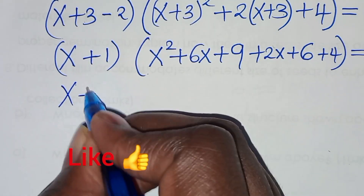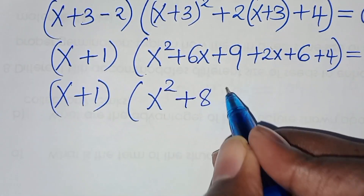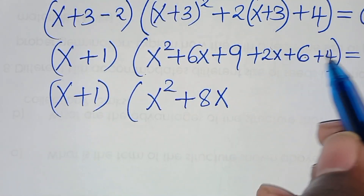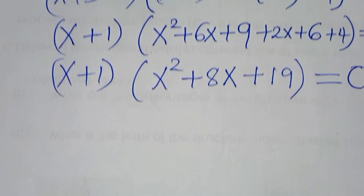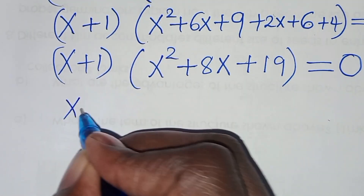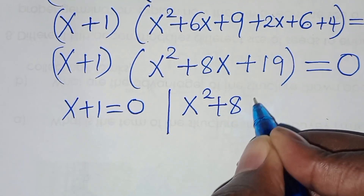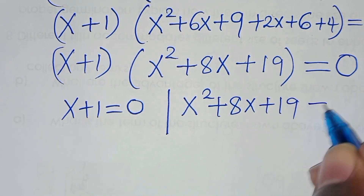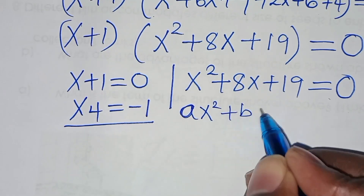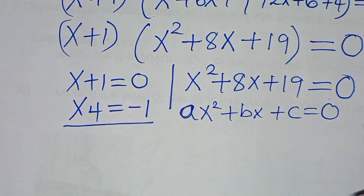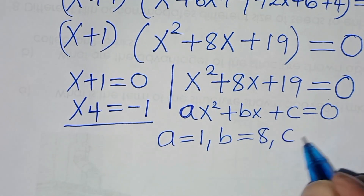This implies we have x plus 1 times (x squared plus 8x plus 19) equals 0. So we have two parts: the first part is x plus 1 equals 0, giving x4 equal to minus 1. The second part is a quadratic equation x squared plus 8x plus 19 equals 0, where a equals 1, b equals 8, and c equals 19.